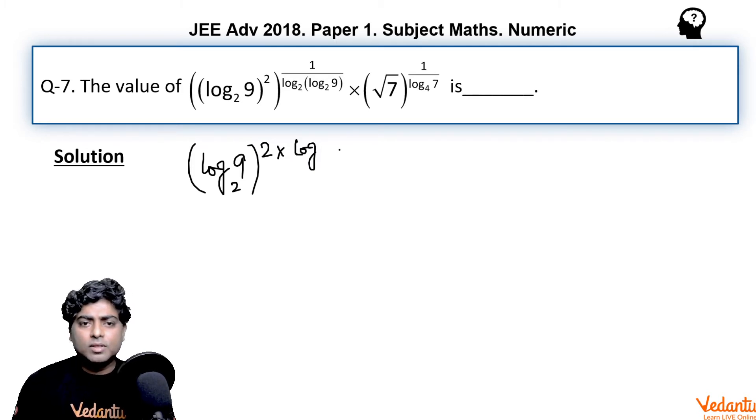The base will be log₂9, which is a number, and the argument would be 2. The second term is 7^(1/2), which is √7, and we can again interchange the base and index to get log₇4.